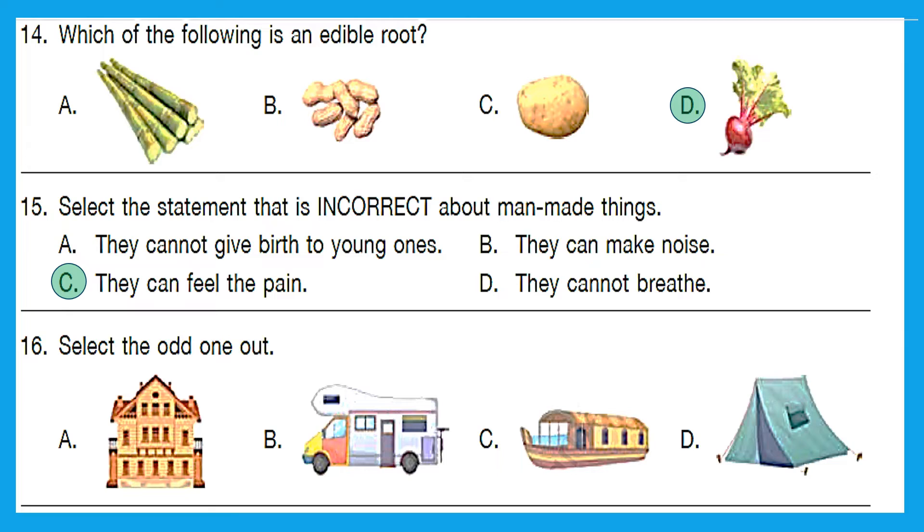Question 16. Select the odd one out. Now here we have bungalow, then we have caravan, we have houseboat, and we have tent. Now here bungalow is a permanent house whereas caravan, houseboat and tent are temporary houses. So option A bungalow will be odd one out.